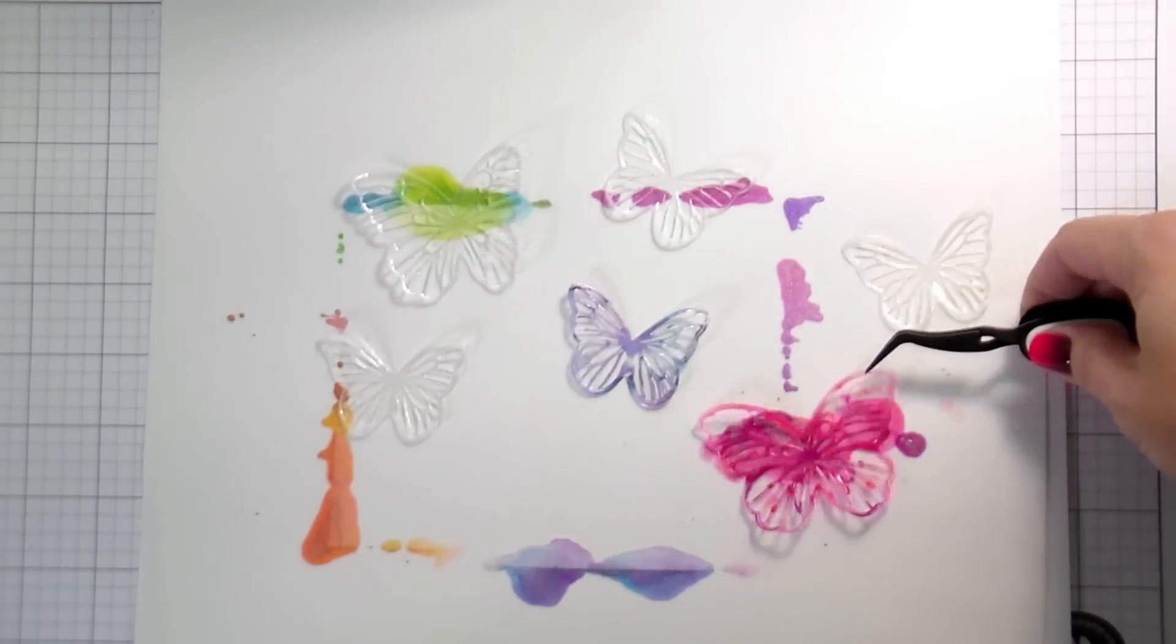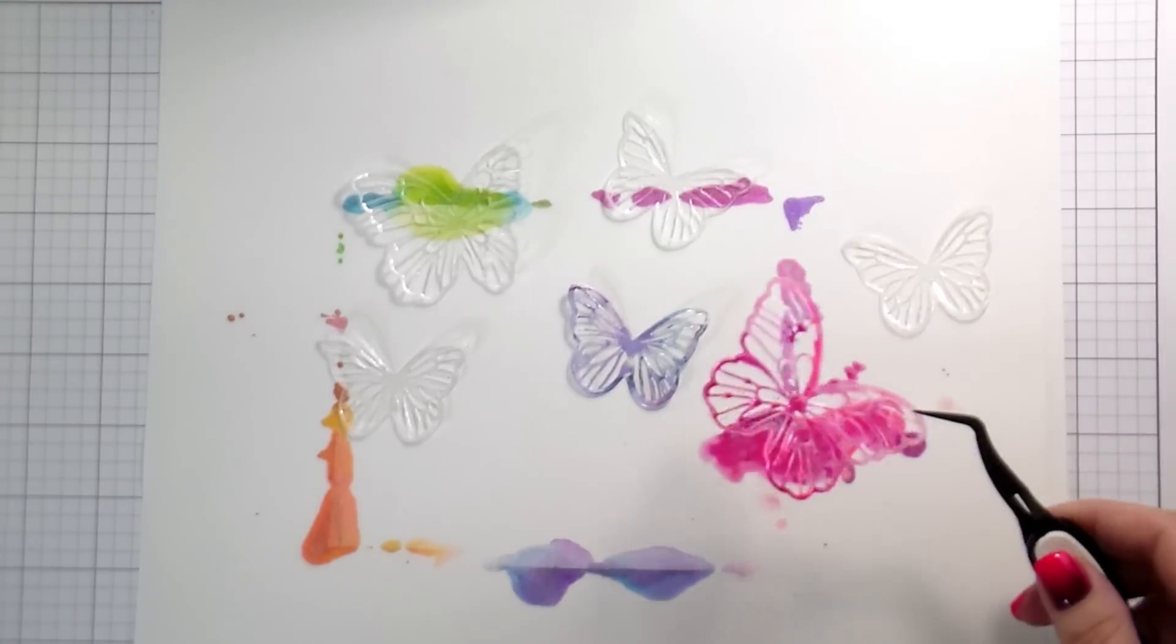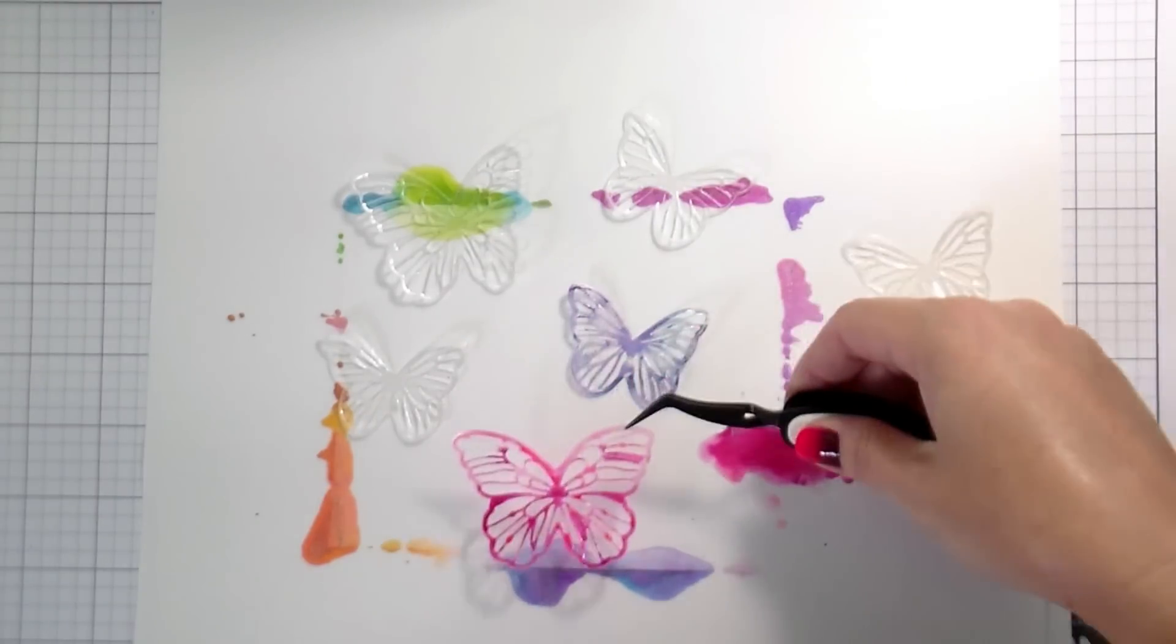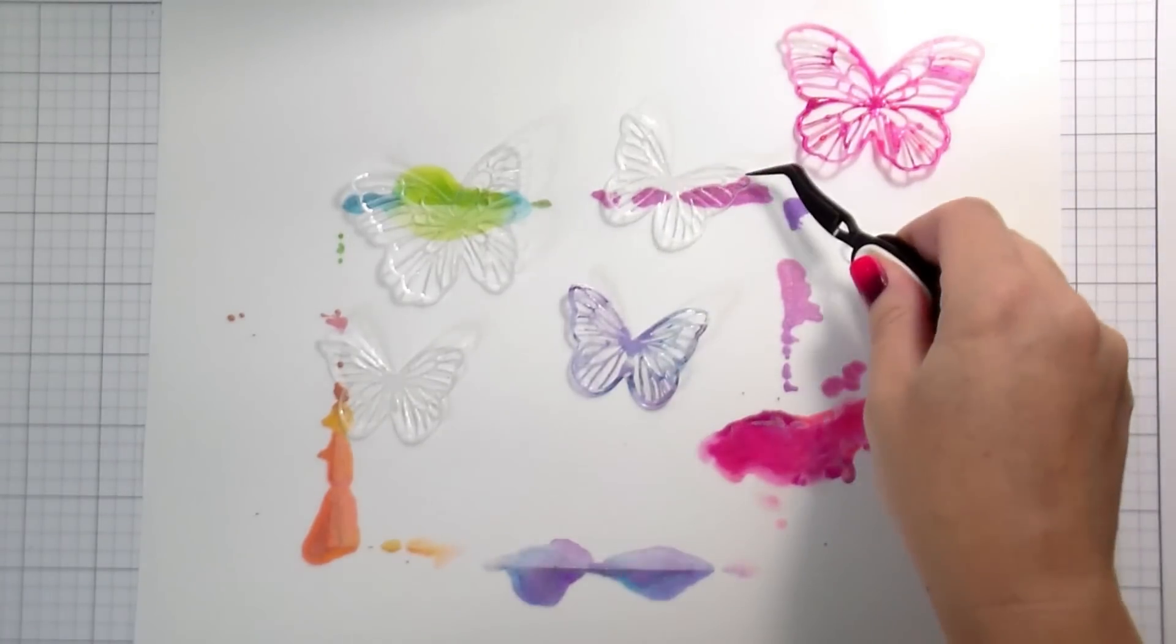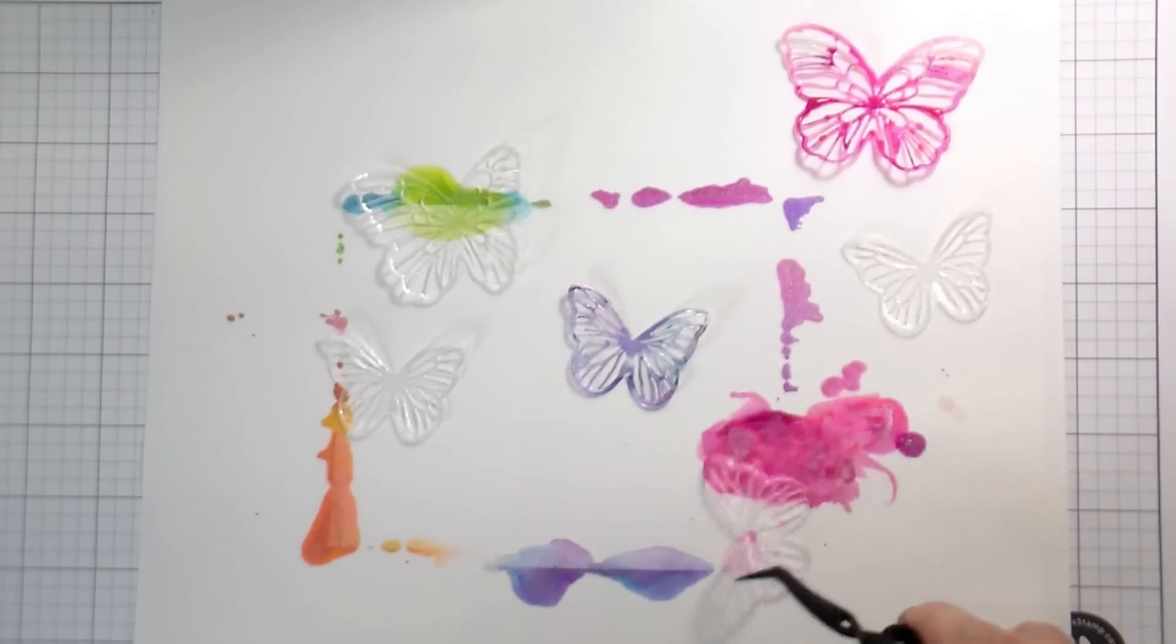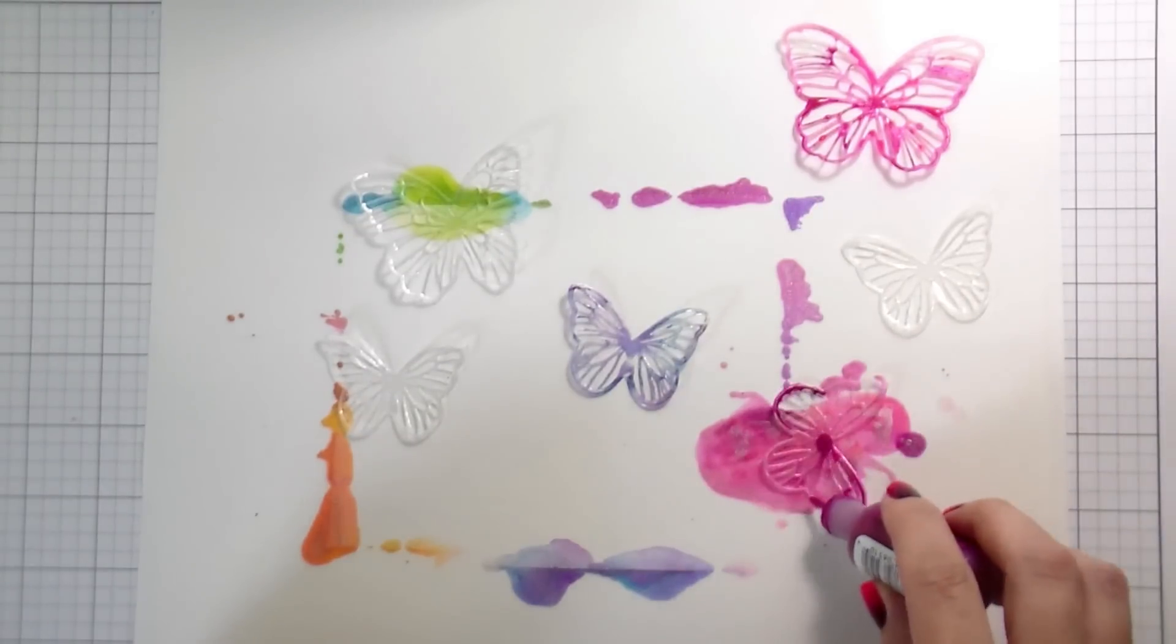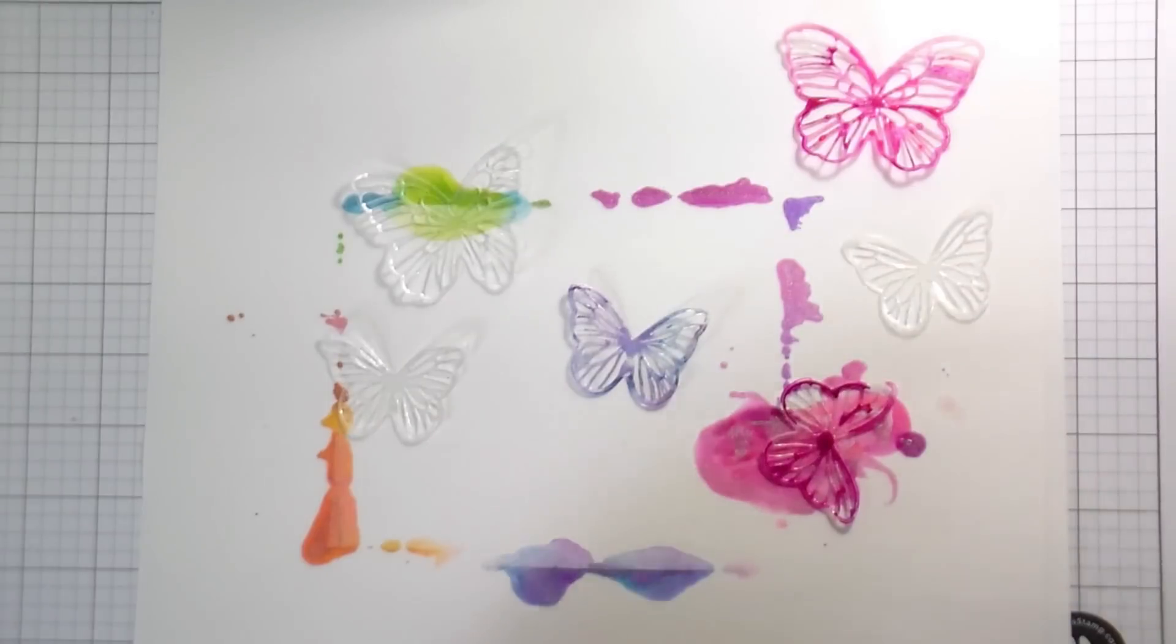So we're going to go ahead and color all of these butterflies same way that I did before, just continually adding that coloring until I'm happy with it. And this is really forgiving. Like you don't have to really think about it. Just drop in some color, move on to the next.